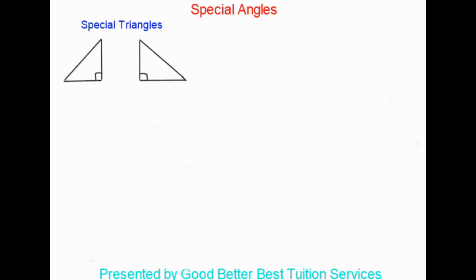Moving on, what we will be looking at is special angles. The way we access these special angles is by using our two special triangles. You have to memorize these triangles so that you're able to use them in your test, because usually when you get to these questions they ask you to work out the angle without the use of a calculator.